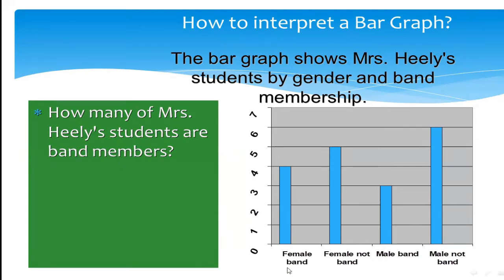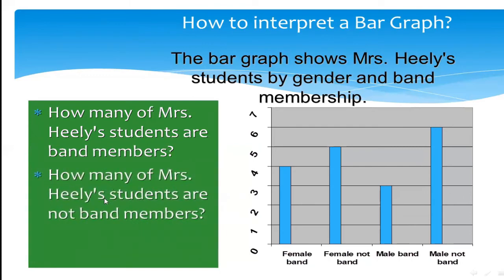According to the graph, female band members are 4 and male band members are 3, so 4 plus 3 equals 7 — there are 7 students who are band members. Now if the question is how many students are not band members: females not in the band are 5 and males not in the band are 6, so 5 plus 6 equals 11 students.